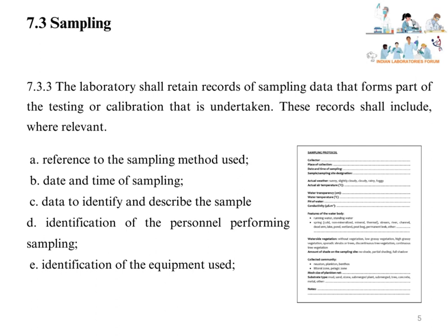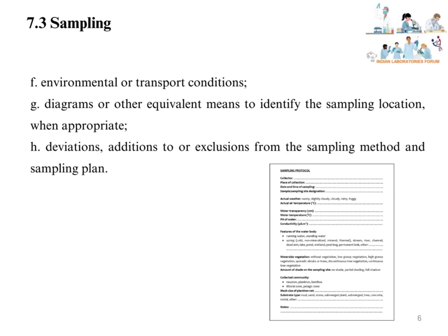Records shall also include: identification of the personnel performing sampling, identification of the equipment used for sampling, environmental or transport conditions of samples, diagrams or other equivalent means to identify the sampling location when appropriate, and deviations, additions to, or exclusions from the sampling method and sampling plan. All these details should be available in the sampling record, and records should be retained as per the laboratory-specific retention policy.